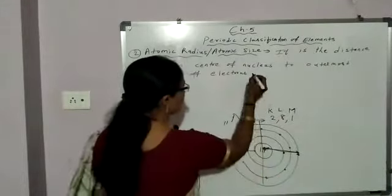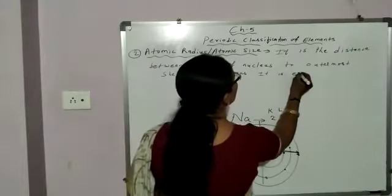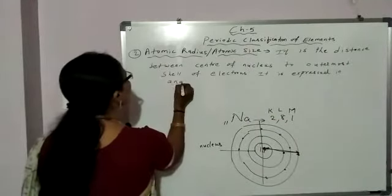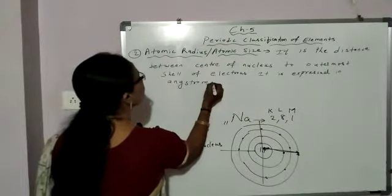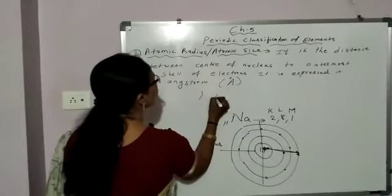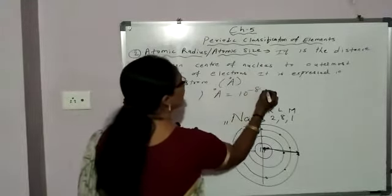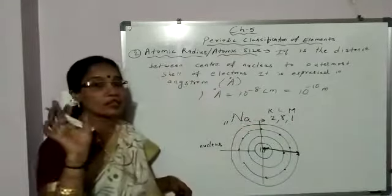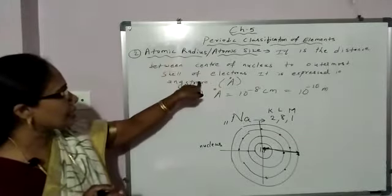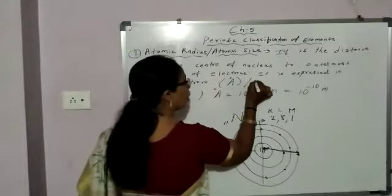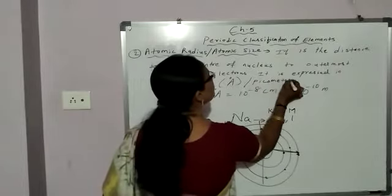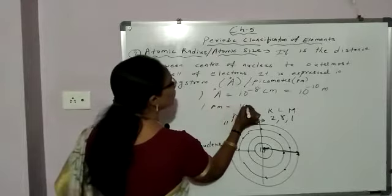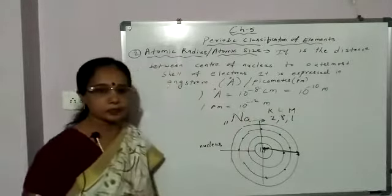Atomic radius or atomic size is expressed in angstrom. One angstrom is equal to 10 to the power minus 8 centimeter, or 10 to the power minus 10 meter. It can also be expressed in picometer, symbol pm, where one picometer is equal to 10 to the power minus 12 meter.